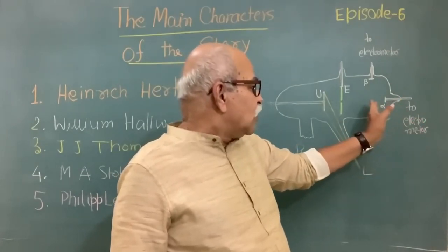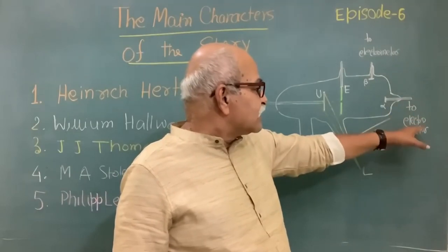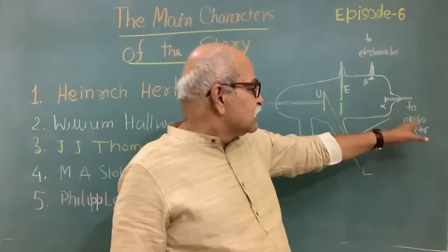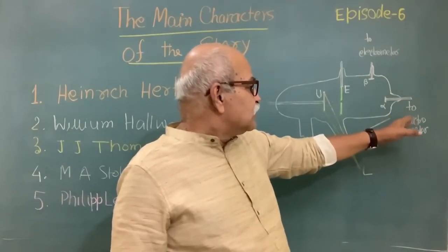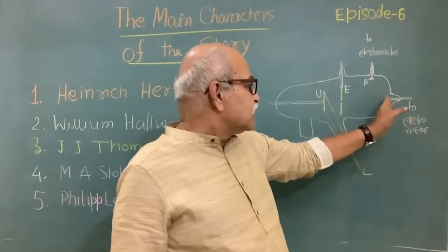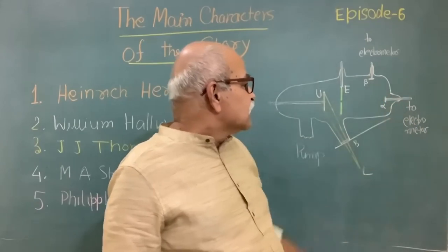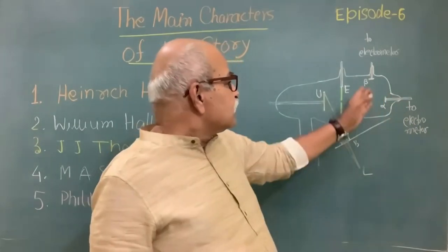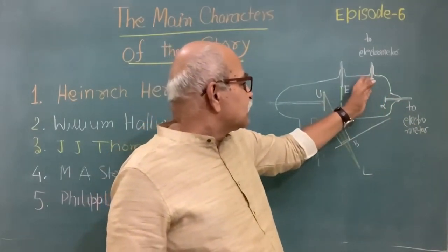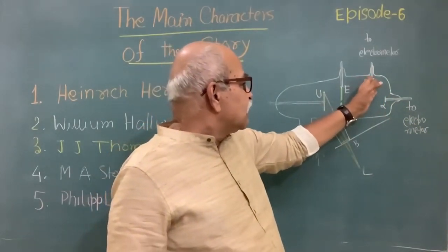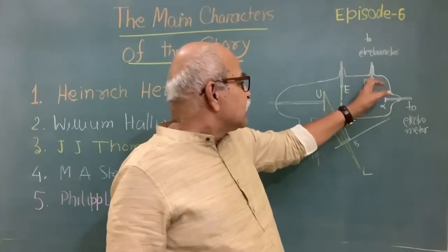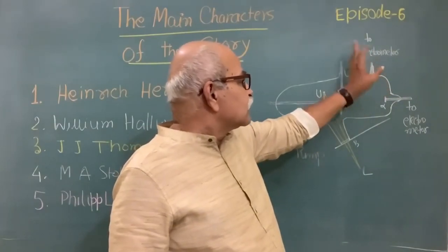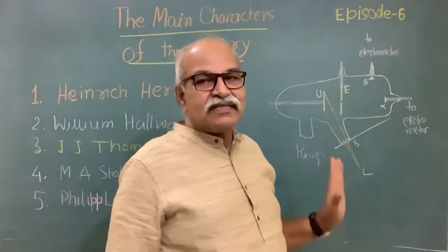In how much time, how much charge has been measured — that tells me the kind of current received. Now, this is another similar metal, a beta electrode you can say, and this is connected to another electrometer. So this is the setup.